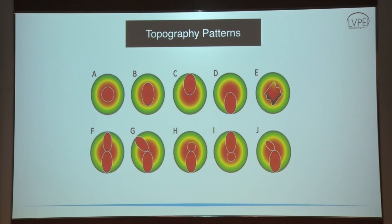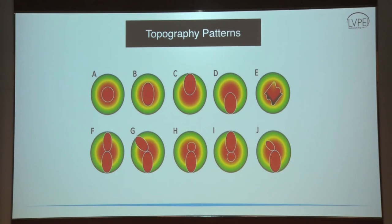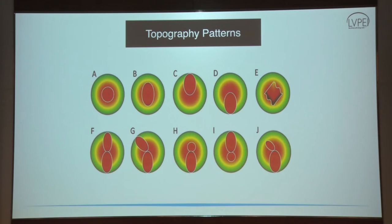Based on keratometry maps, there are different topography patterns. A regular cornea, a steep cornea, superior steepening, inferior steepening, an irregular cornea such as in corneal scars, a symmetric bowtie appearance, a symmetric bowtie where the radial axis is skewed, an asymmetric bowtie with inferior steepening, an asymmetric bowtie with superior steepening, and an asymmetric bowtie with a skewed radial axis — which is very commonly seen in cases of keratoconus.